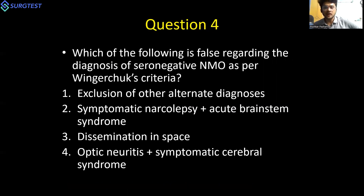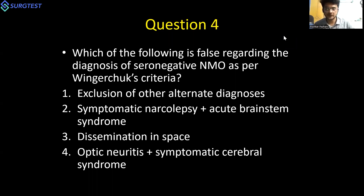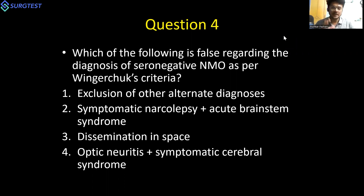Question four: which of the following is false regarding the diagnosis of seronegative NMOSD as per Vingachak's criteria? The options are: exclusion of alternate diagnosis; symptomatic narcolepsy plus acute brainstem syndrome; dissemination in space; or optic neuritis plus symptomatic cerebral syndrome. This question highlights that the diagnostic criteria differ for seropositive versus seronegative NMO.